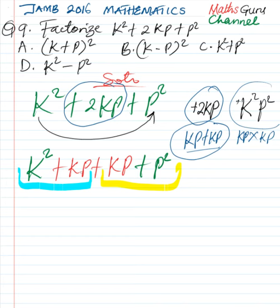k square and kp, what is common to them? The common factor, highest common factor. So it is k. So bringing k out, k square divided by k, we have k. kp divided by k, we are going to have p.